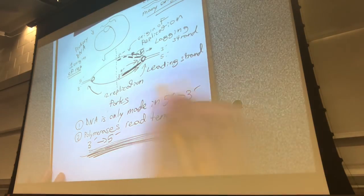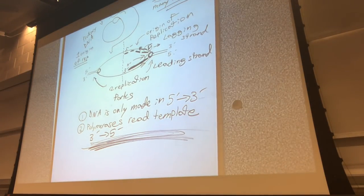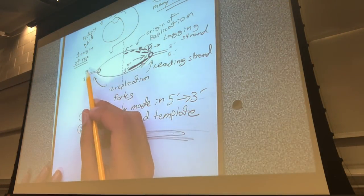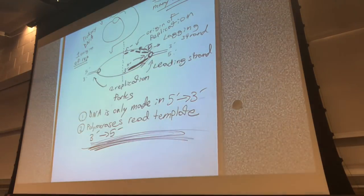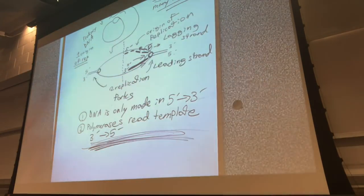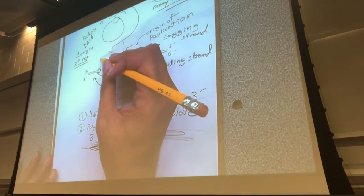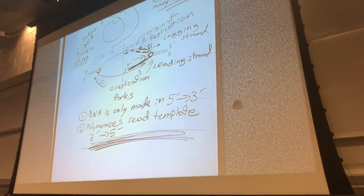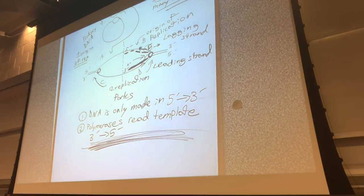That is how you tell the difference between leading and lagging strand. A very common exam question will give you a drawing with only the 5' and 3' directions labeled — no enzymes, no fragments — with corners labeled A, B, C, and D. They'll ask which strands are your leading strands, which are lagging, which are made continuously, or which are made discontinuously.